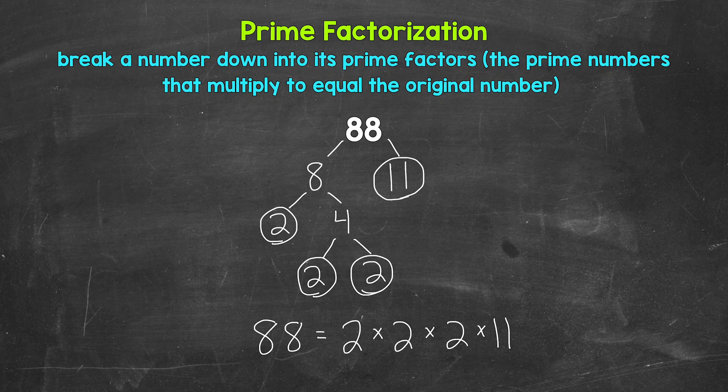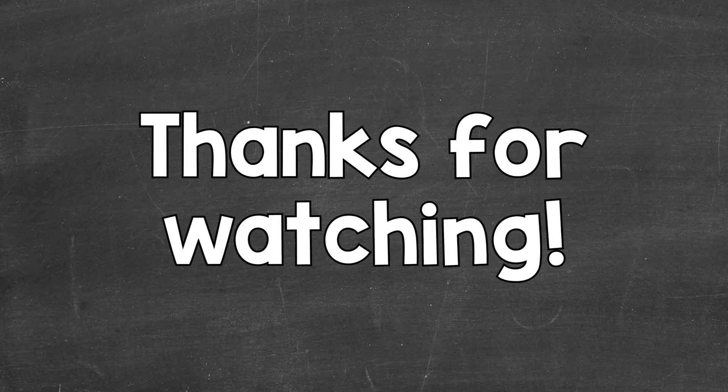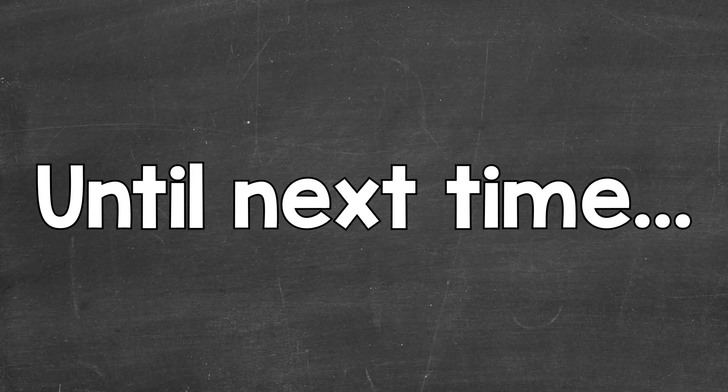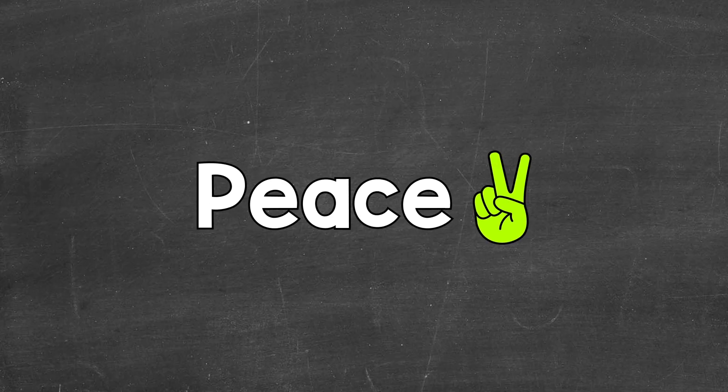2 times 2 is 4, times 2 is 8, times 11 is 88. So we are correct. So there you have it — there's the prime factorization of 88. I hope that helped. Thanks so much for watching. Until next time, peace.